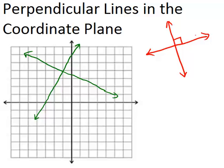In the coordinate plane, perpendicular lines have a relationship as far as their slopes. The slopes of perpendicular lines have something special going on. So if we look over at the coordinate plane and look at these two perpendicular lines, let's look at their slopes to figure out what's going on here.